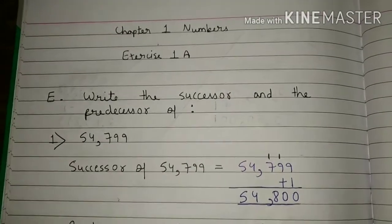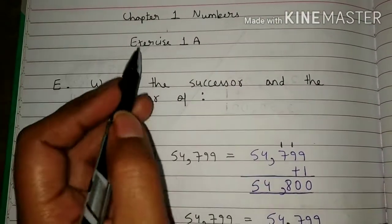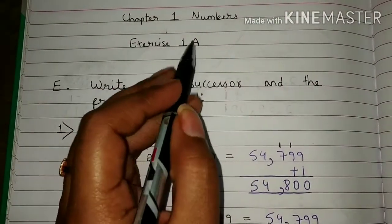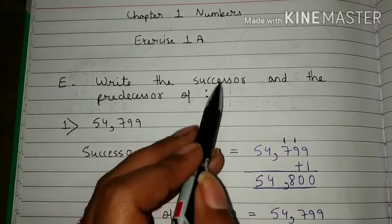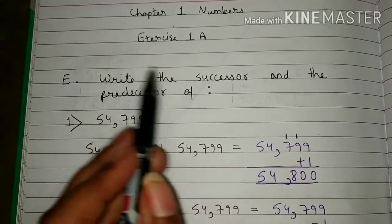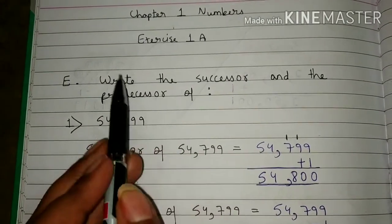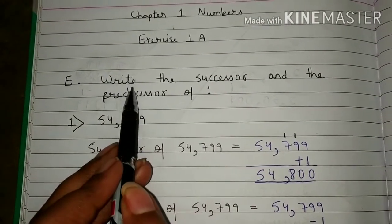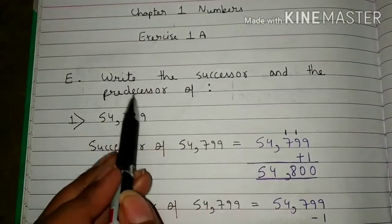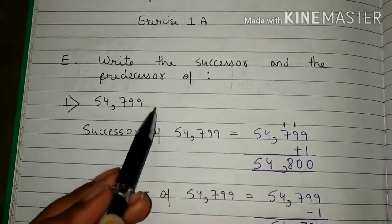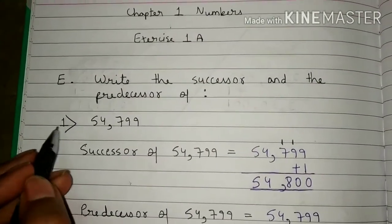Now we will solve question E of exercise 1A. Question E: write the successor and the predecessor of the given numbers. In this question, you have to write the successor and the predecessor of each given number. Now come to the first number.